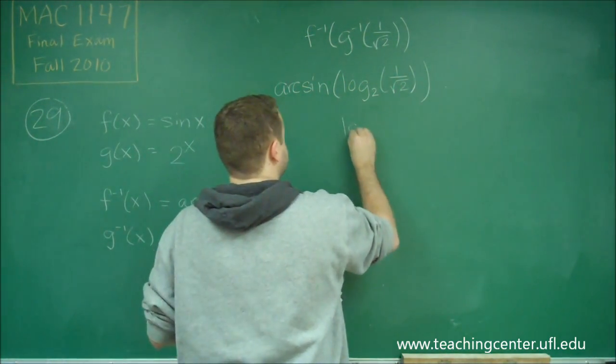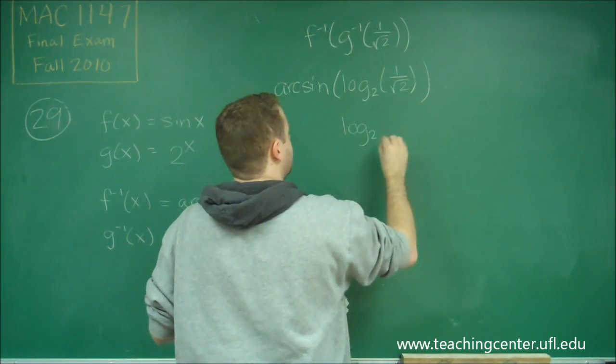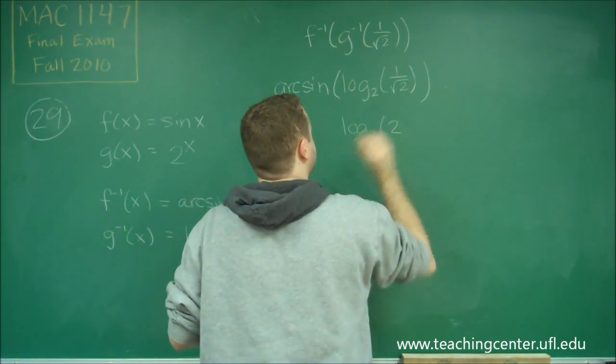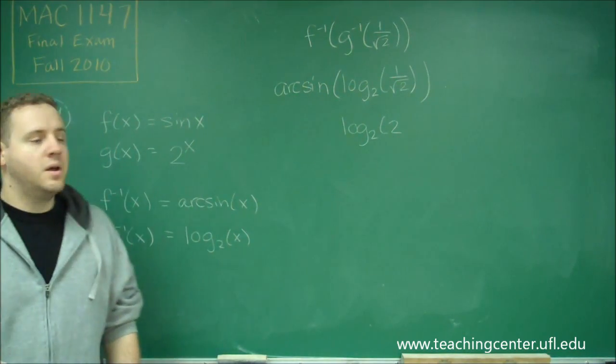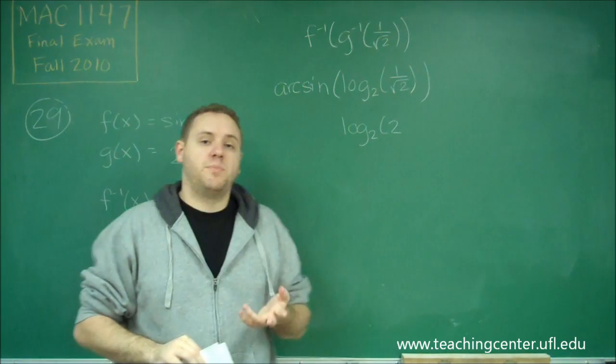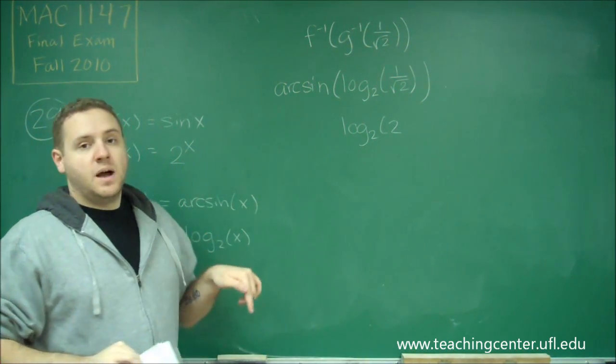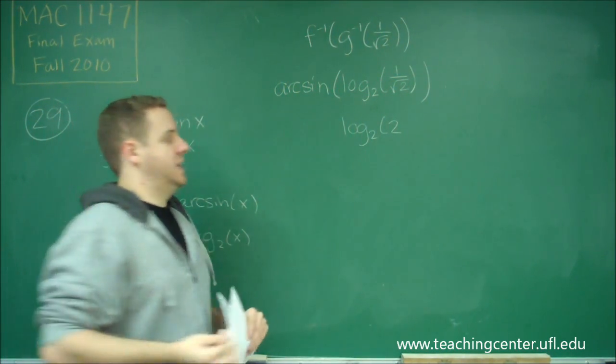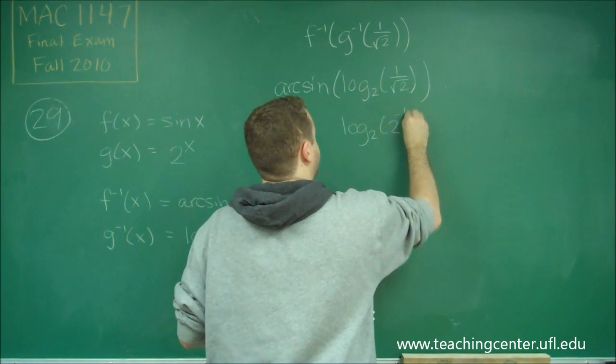So what we can write is, we can write that this is 2 to some power. So what is the power? Well, first of all, it's a square root, so that tells us that it's a 1 half power. And it's also in the denominator of that fraction, so that makes it negative. So we have 2 to the negative 1 half power.